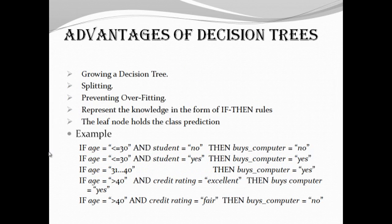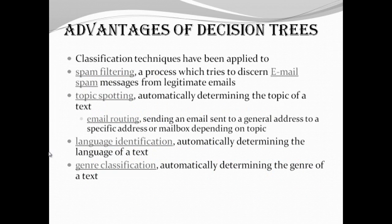Advantages of decision tree include growing a decision tree, splitting into multiple modules, preventing overfitting, and representing knowledge in the form of if-then-else rules. The leaf node holds the class prediction. Applications of decision trees: classification techniques have been applied to spam filtering, a process which tries to discern email spam messages from legitimate emails, topic spotting, automatically determining the topic of a text, email routing, language identification, and general classification.